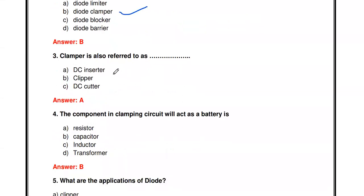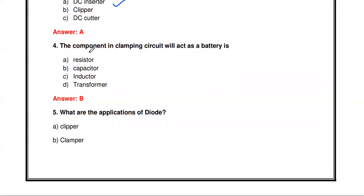Next question: A clamper is also referred to as — DC inserter, clipper, or DC cutter? The other name of the clamper is DC inserter, because the circuit inserts a DC component into the AC input signal.